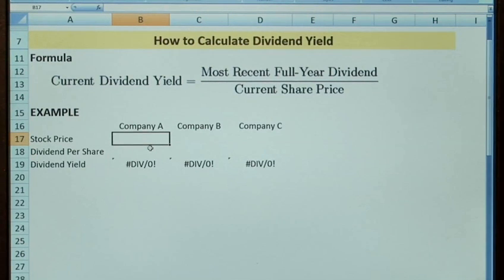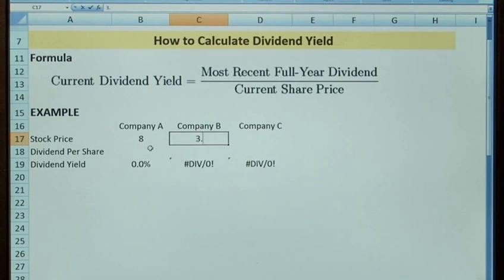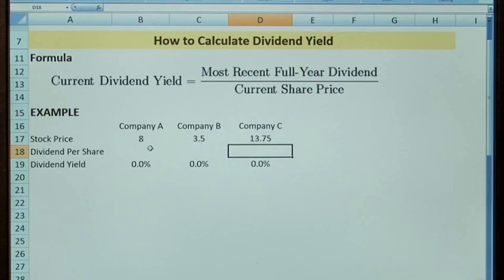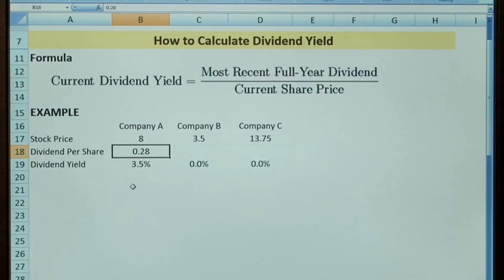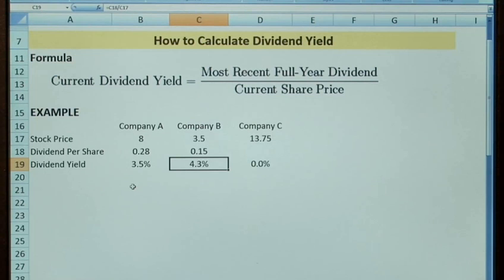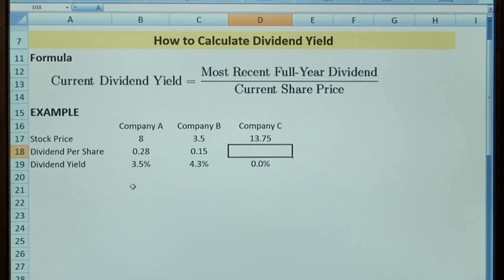The stock price in company A is £8, company B is £3.50, and company C is £13.75. The dividend per share in company A was £0.28, giving a dividend yield of 3.5%. Company B's previous dividend per share was £0.15, giving a dividend yield of 4.3%. And the dividend per share for company C was £8.50, giving a dividend yield of 5.5%.